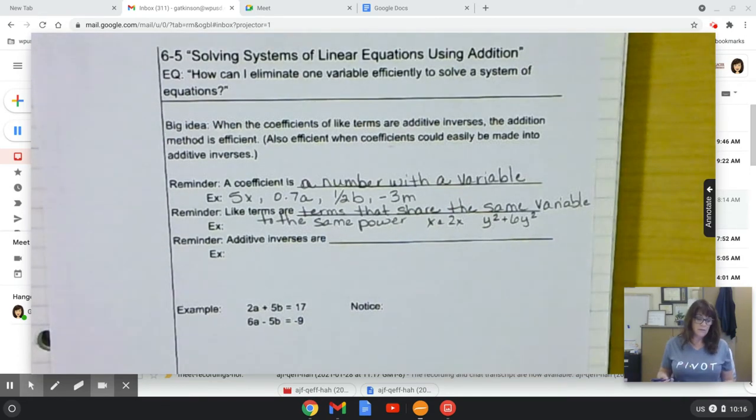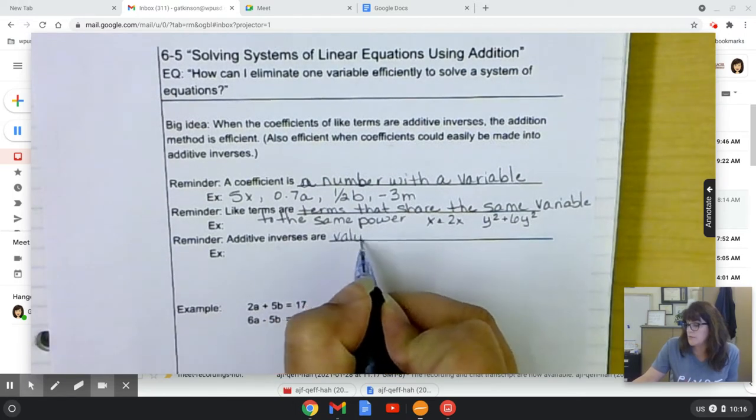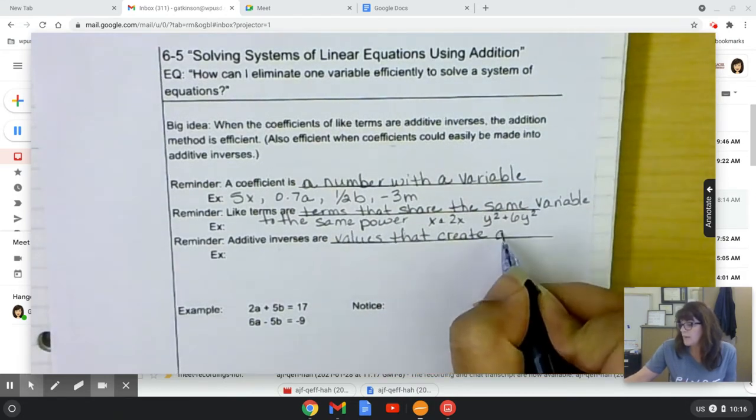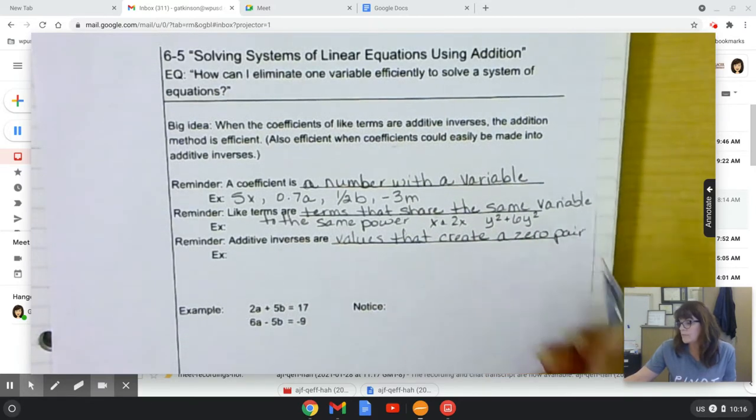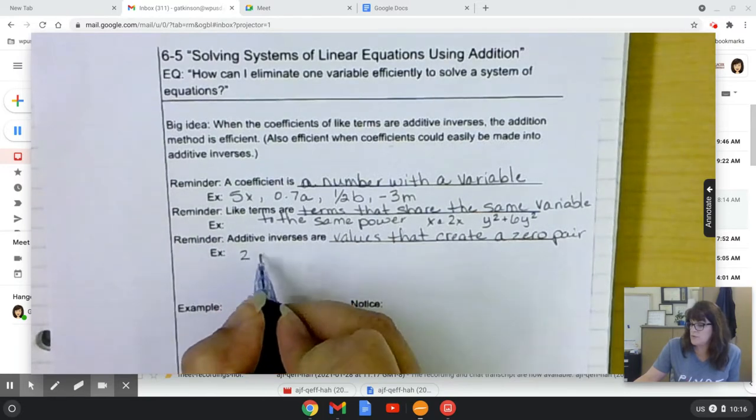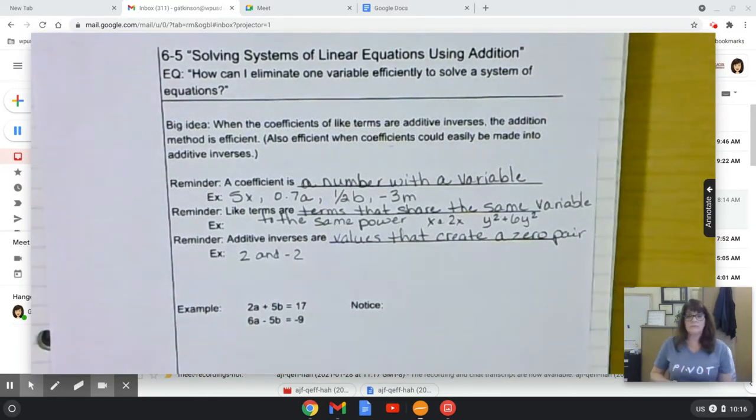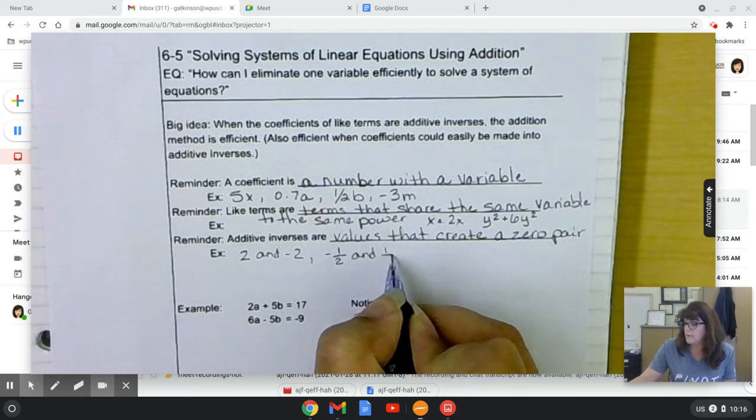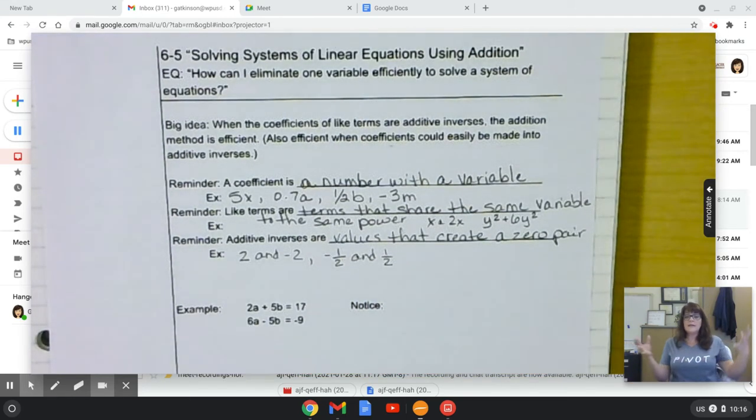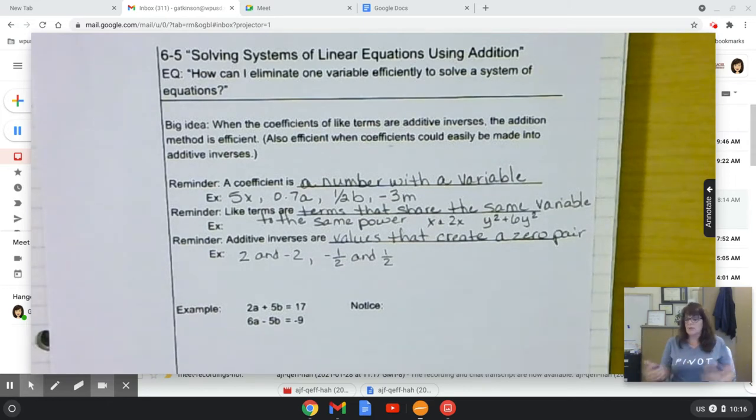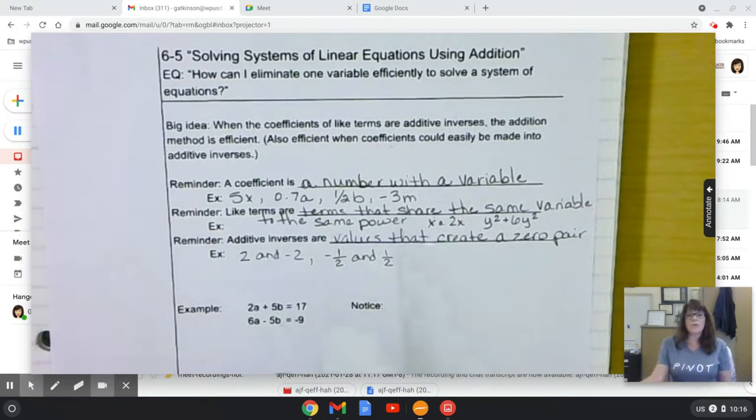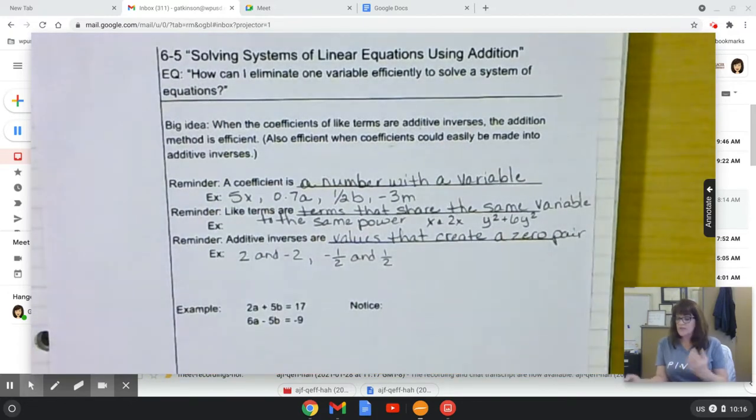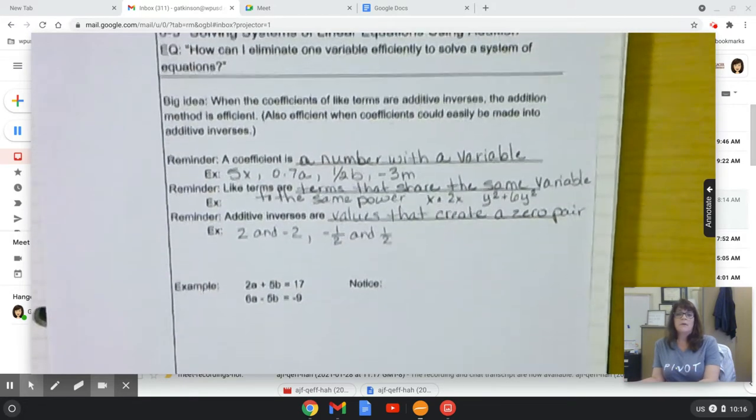Additive inverses are values that create a zero pair. If I put them together, they create zero. 2 and negative 2. Negative 1 half and 1 half. Anything that basically cancels itself out and creates a zero, that's an additive inverse. And this is the thing we're looking for. When we have additive inverses, this is an efficient method. So it's the thing we're looking to identify.